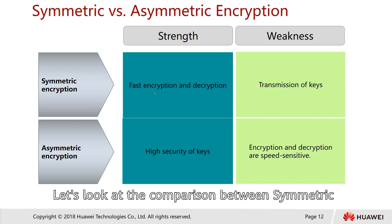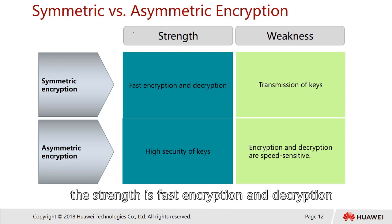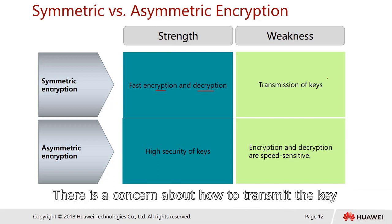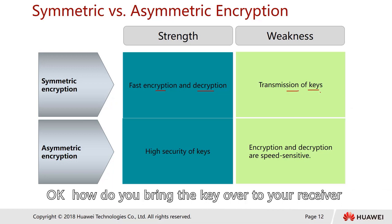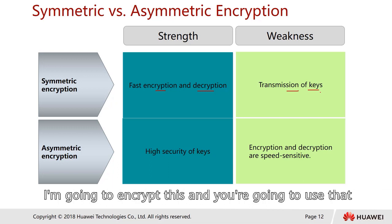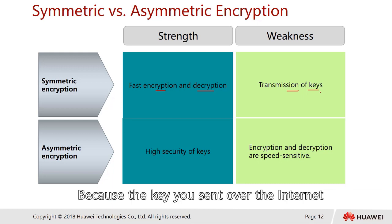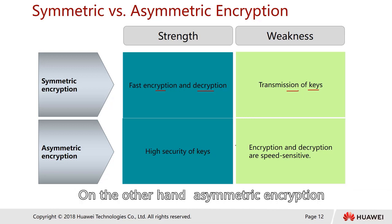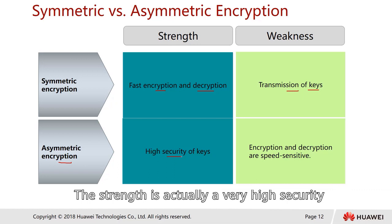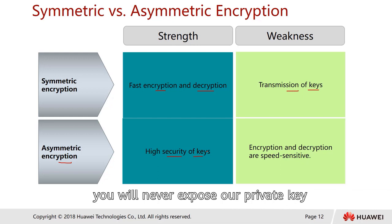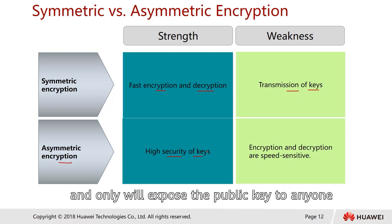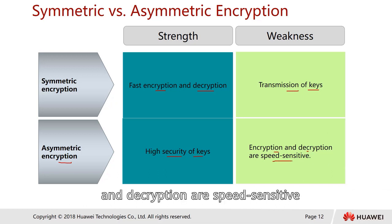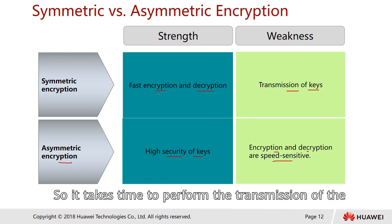Let's compare symmetric and asymmetric encryption. Symmetric encryption's strength is fast encryption and decryption because both parties share the same key. The concern is how to securely transmit the key — if you send it over the internet, the key becomes exposed, defeating the whole purpose. Asymmetric encryption's strength is very high security, since the private key is never exposed. The weakness is that encryption and decryption are speed-sensitive — it takes more time to perform.